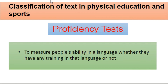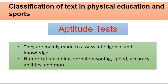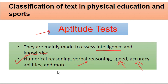The next test is the proficiency test. In this, it is checked whether a person is proficient in a skill or language — for example, whether they have good language training and are proficient in it. The next test is the aptitude test, where a person's intelligence and knowledge are assessed.